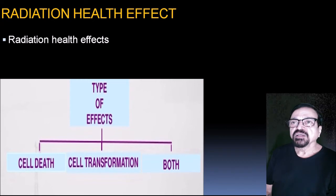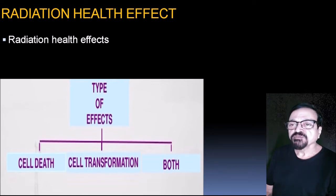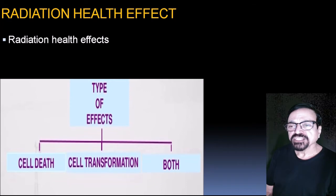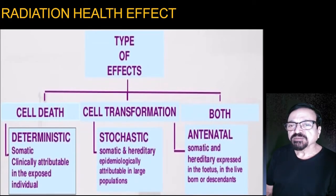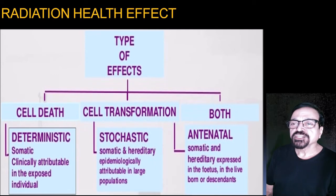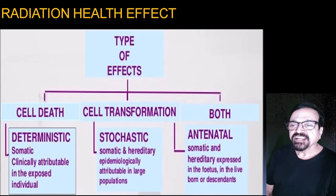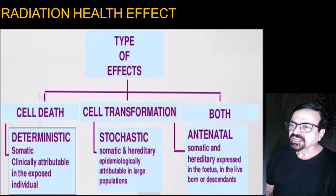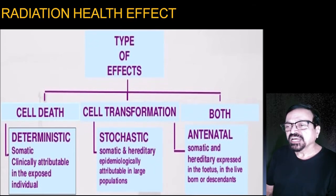Radiation health effects are of the following types: cell death can occur, cell transformation can occur, or both. Deterministic effects are somatic, clinically attributable in the exposed individual. Stochastic effects are mainly somatic or hereditary, epidemiologically attributable to large populations. Both types can also be seen in the fetus, live-born newborns, or descendants.